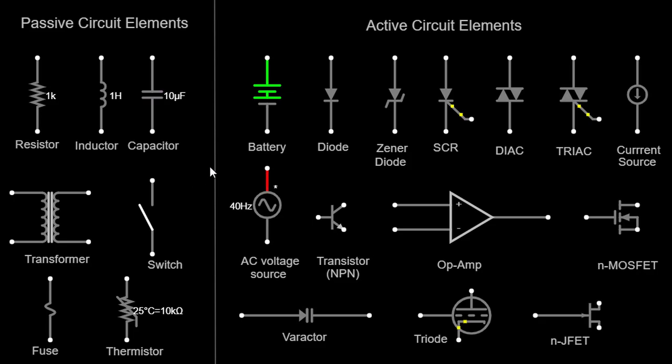Additionally, we will uncover the realm of active circuit elements including batteries, diodes, Zener diodes, SCR, DIAC, TRIAC, current sources, AC voltage sources, transistors NPN, op amps, NMOSFET, varactors, triodes, and NJFET.